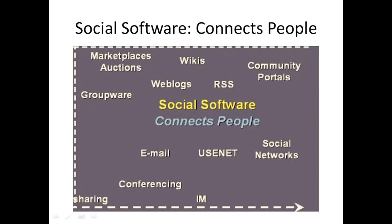Spivak's model reflects this by suggesting that social software could be characterized by a low degree of information connectivity — that is, information is generally not related to other information from other sites — and a high degree of social connectivity, since social software implies that the user is using the software primarily to communicate with others. Explore the types of technologies that Spivak places into this quadrant.